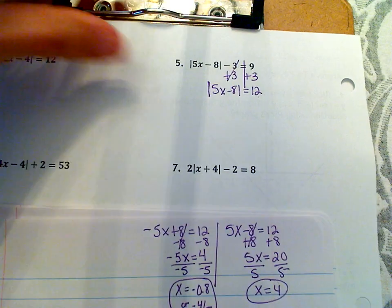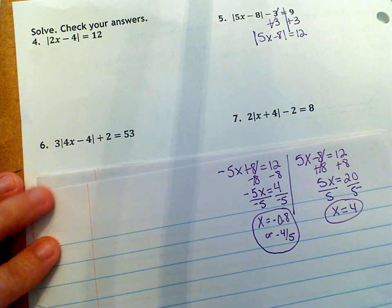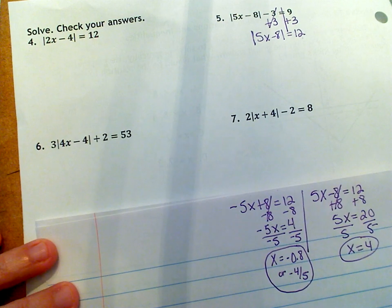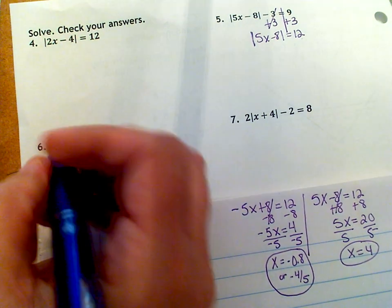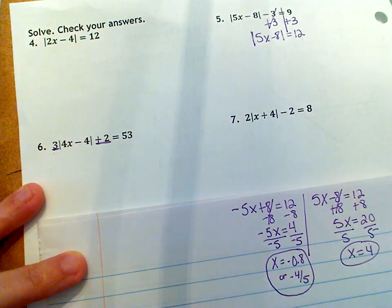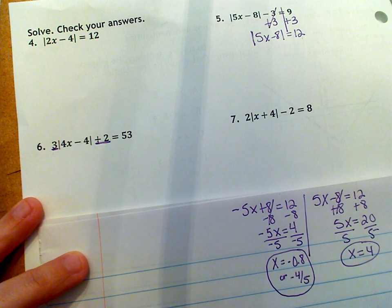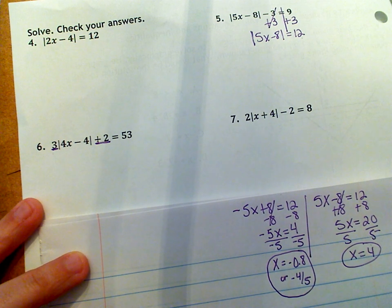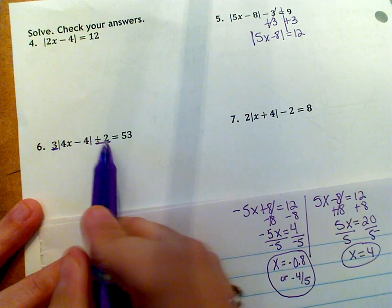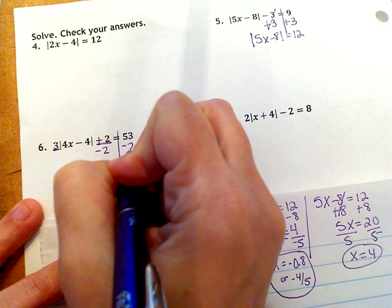So first thing we need to do on number six is get the bars by themselves. So if you look at the bars, you'll notice that you've got a three that's being multiplied on the outside and you have a two that's being added. So you have to figure out what are we going to do first? You're going to get rid of anything that's added or subtracted first, then deal with what's being multiplied or divided. So we're going to get rid of this plus two. So we're going to subtract two and we're going to do it to both sides.